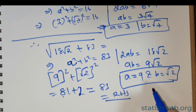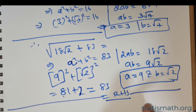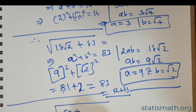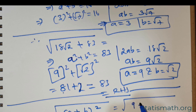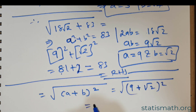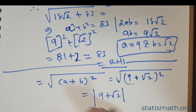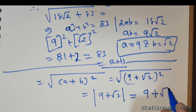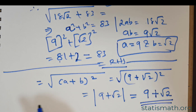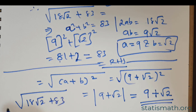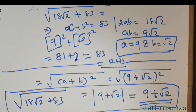So the solution can be obtained as follows: 83 + 18√2 was successfully produced by (a + b)². With a = 9 and b = √2, applying the square root gives the modulus of (9 + √2), which can be rewritten as 9 + √2. So on the left-hand side we were asked to find the square root of 18√2 + 83, and 9 + √2 is the final solution.